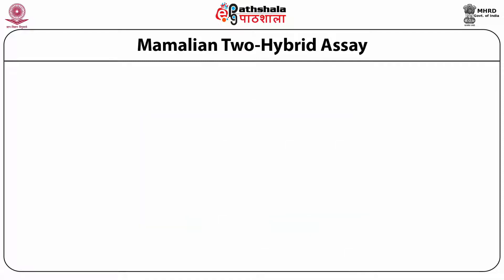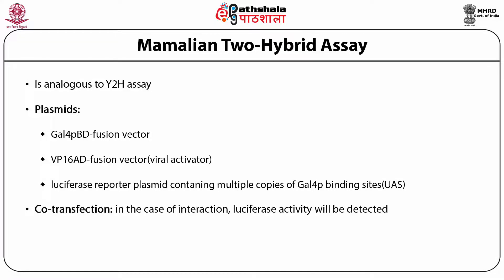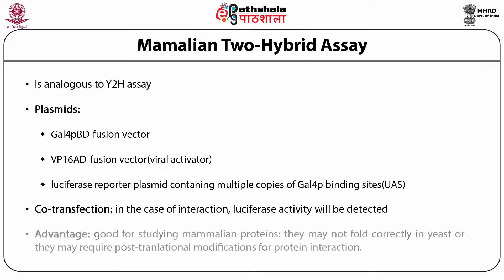The mammalian two-hybrid assay is analogous to the Y2H assay using plasmids: a Gal4BD fusion vector and VP16AD fusion vector. Upon co-transfection, in the case of interactions, luciferase activity will be detected. An advantage of this technique is that it is good for studying mammalian proteins, which may not fold correctly in yeast or may require post-translational modifications for protein interaction.